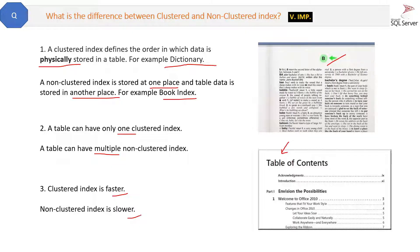You can easily differentiate this by comparing how fast a dictionary is versus a book index. Obviously, the dictionary — which represents the clustered index — is faster.